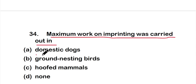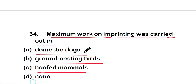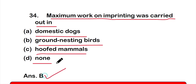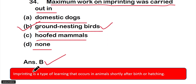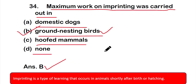Question number 34: Maximum work on imprinting was carried out in — option A: domestic dogs, option B: ground nesting birds, option C: hoofed mammals, or option D: none. The correct answer is option B — ground nesting birds. Imprinting is a type of learning that occurs in animals shortly after their birth or hatching.